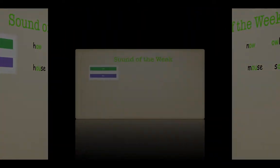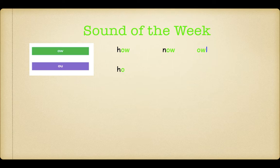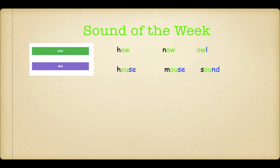Our sound of the week — we just keep learning these over and over again. At the beginning of Howl we have H, owl. At the beginning of Now we have N, owl. At the end of Owl, I've coloured it in blue because it's a different sound, and it starts with the grapheme O-W, owl. In the next group of words, the H is in black, the O-U owl sound is in green, and the end sounds are in blue. So: House — H, owl, S. Mouse — M, owl, S. Sound — S, owl, Nd. So we have our six words.